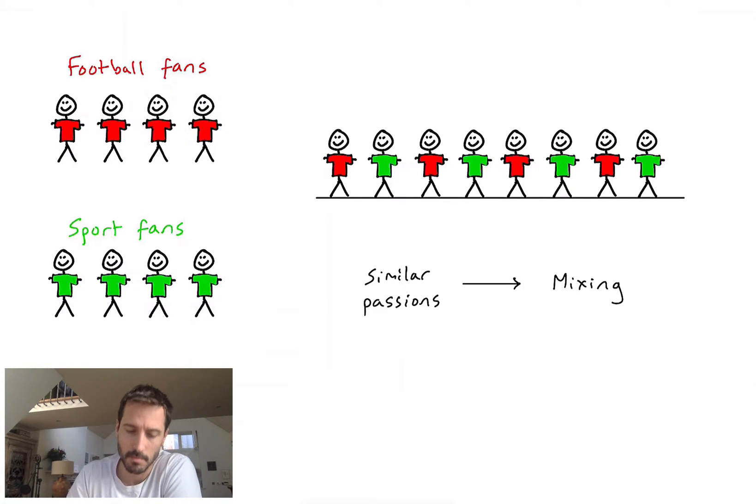I imagine in my playground I'm actually going to see a fair bit of mixing there. And why is that? Well, this time my two groups of people have similar passions. They can all talk about sport, they can probably all talk about football, so they're much more likely to be happy talking to each other as they are with people from their own group. The resulting effect here is that we get some nice mixing in my playground.